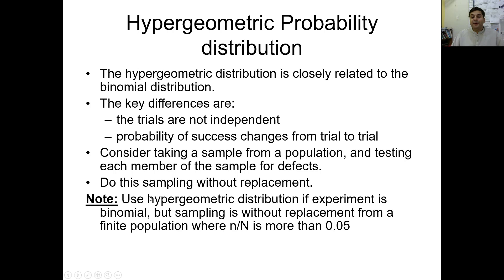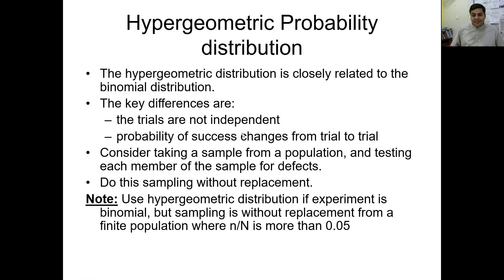Use hypergeometric distribution if the experiment is binomial but sampling is without replacement from a finite population, where when you divide the sample size by the population size and it is more than 0.05, then use hypergeometric distribution. If the success changes from trial to trial, if the experiment is dependent and not independent, then we will use hypergeometric distribution.